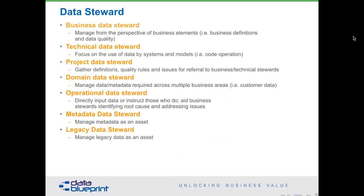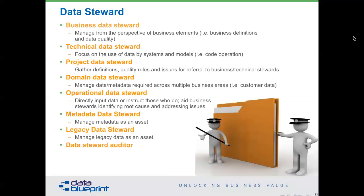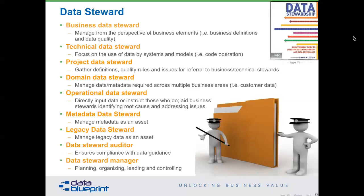I've seen too many organizations go down a rabbit hole where they sit down and try to predetermine how things are going to go forward. If you have this many steward types in your organization, you need an auditor because we can't have everybody running around doing things without somebody putting some controls in place. And then we need a manager to manage them on top of this. It's a very good book — I highly recommend it — but this should be aspirational, something we head towards rather than starting off here, because this is complicated.